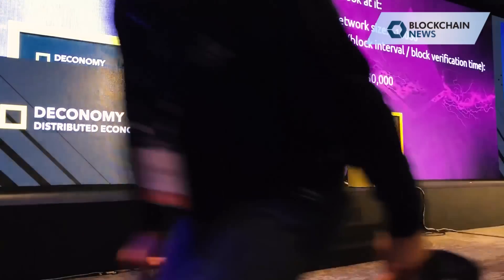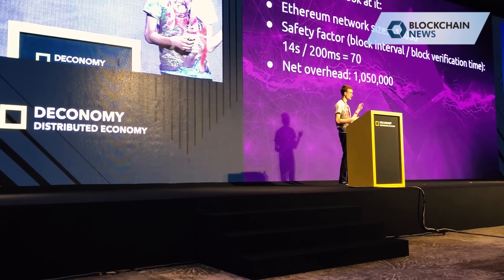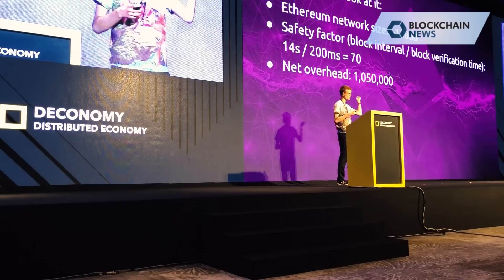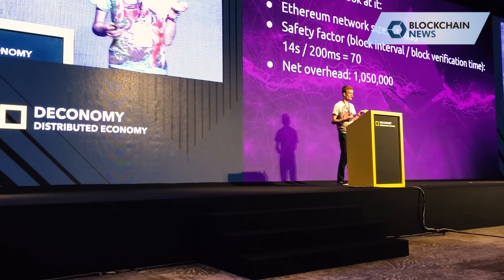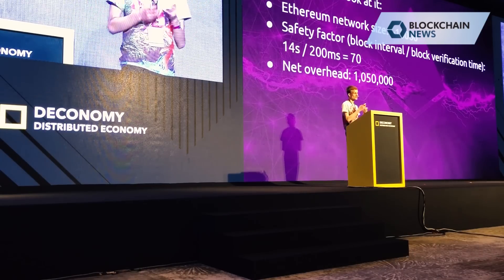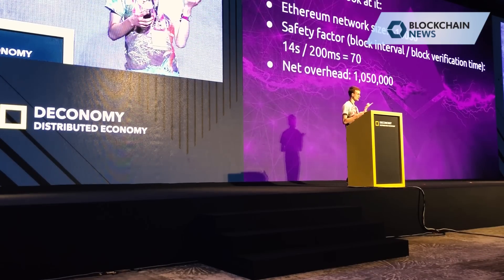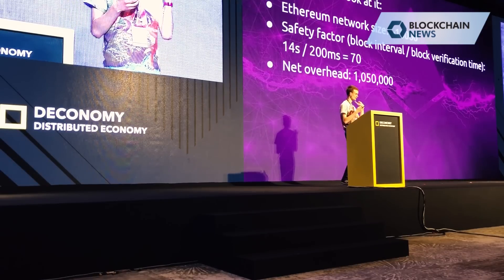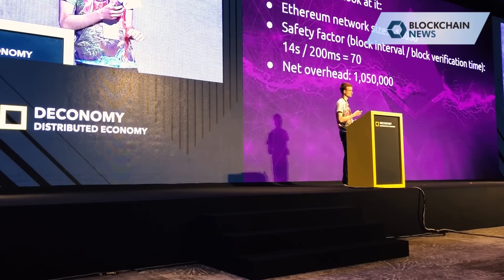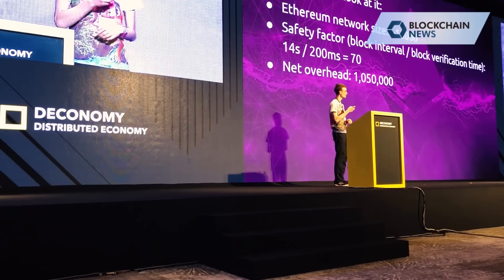Another way to look at it: Ethereum network size is 15,000 nodes. The safety factor — basically the block interval of 14 seconds divided by the block verification time of 200 milliseconds — is about 70. So a node in the Ethereum network spends about 1/70 of its time actually doing computation. This fairly large safety factor is needed to keep uncle rates down, to have a buffer against denial-of-service attacks, and various other considerations. Multiply the network size by the safety factor and you get 1.05 million overhead.